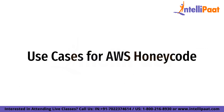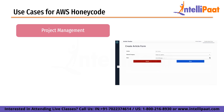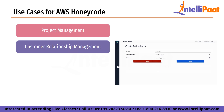Now we'll look at some of the use cases of AWS Honeycode. Starting with project management — Honeycode can be used to create custom project management apps that track tasks, deadlines, and milestones, helping businesses stay organized and ensure that projects are completed on time. Next is customer relationship management. Honeycode can be used to build custom CRM apps that track customer interactions, sales leads, and marketing campaigns, helping businesses manage customer relationships more effectively.